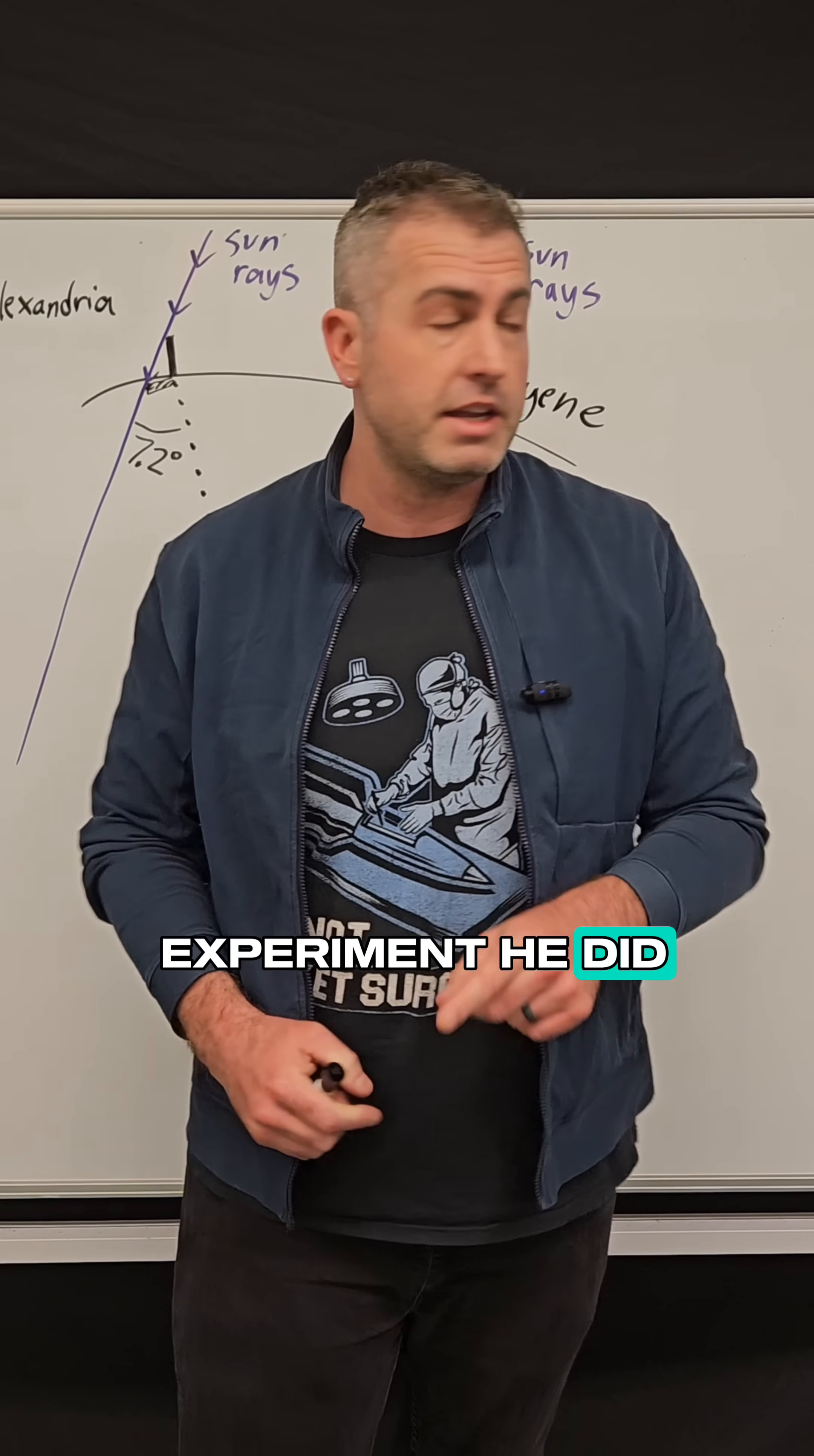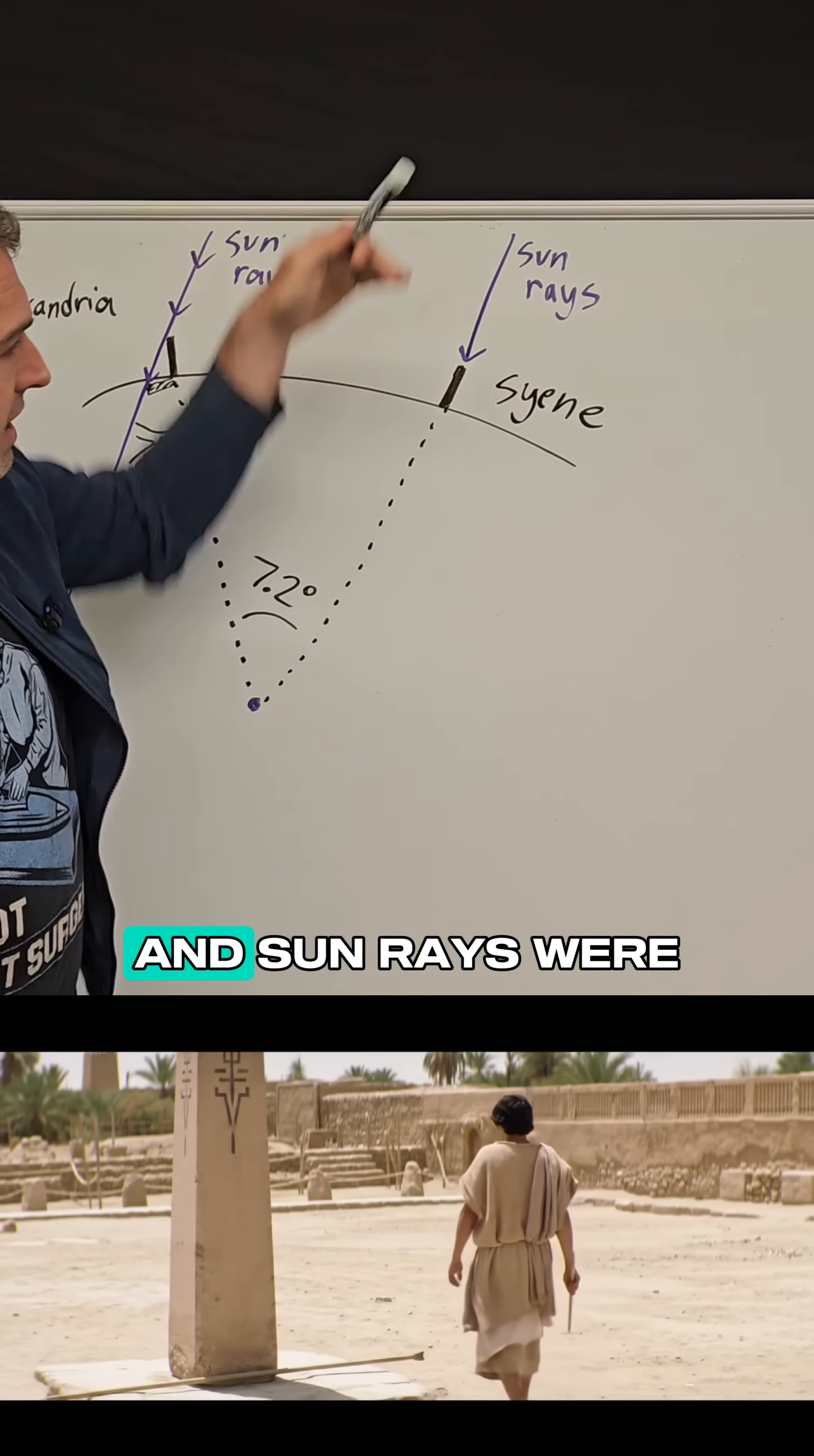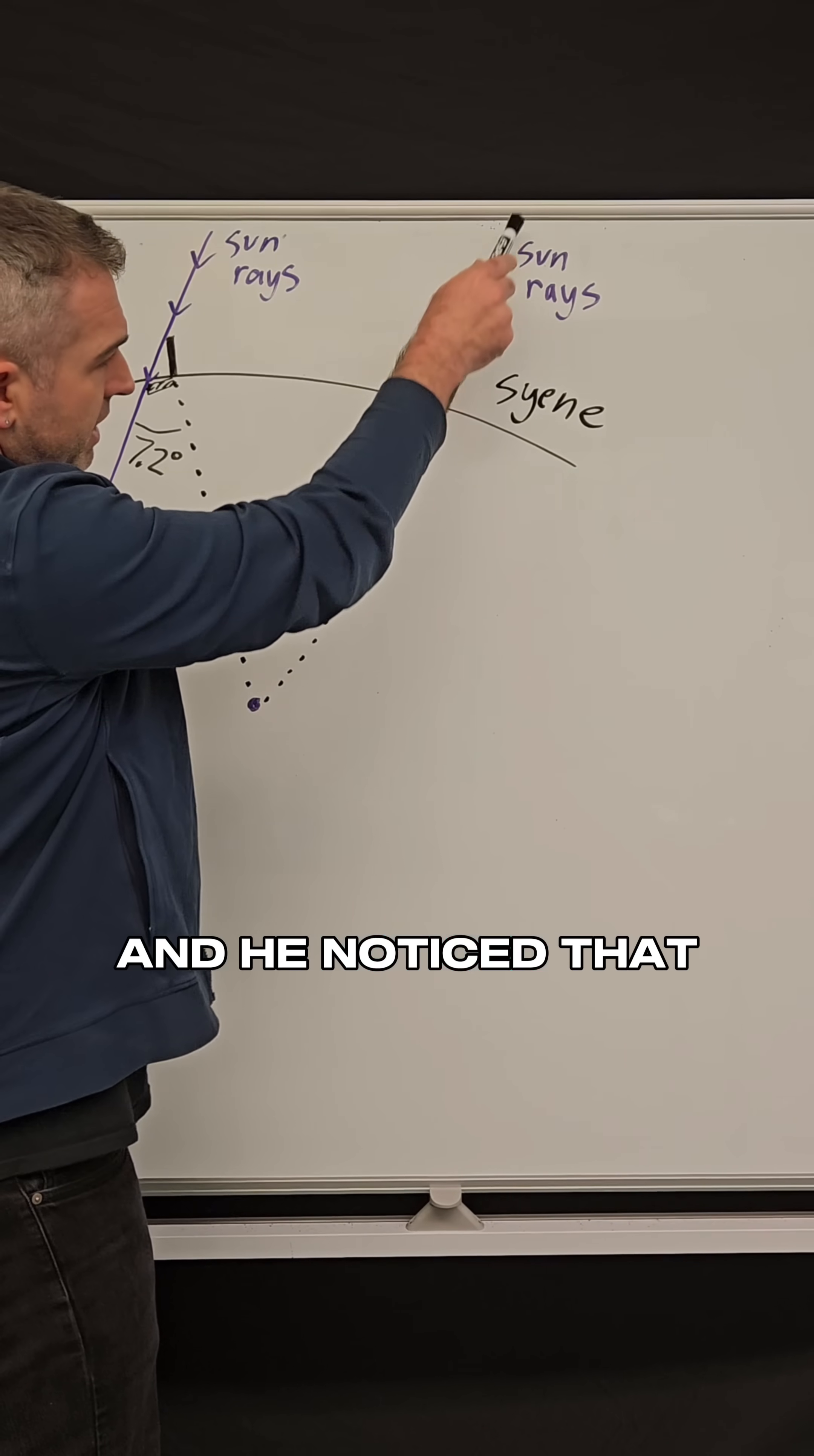And here's the simple experiment he did. Basically he knew that on the day of the summer solstice at exactly noon that if you stood in the city of Syene and sun rays were shining down on you they cast no shadow on the ground because the Sun is directly above. So what he did was he put a stick there and he noticed that when the Sun hit the stick it cast no shadow.